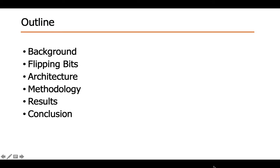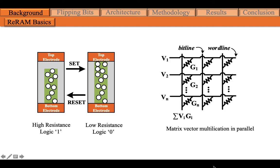This is the outline of this presentation. Let's first start with some backgrounds on RERAM devices. An RERAM cell is a sandwiched structure. A set or reset operation will construct or destruct the oxygen vacancy filaments in the middle layer to change the resistance of the cell. The high resistance state represents a 1, and the low resistance state represents a 0. RERAM cells are usually organized as a crossbar structure to conduct matrix-vector multiplication. The matrix values are programmed into RERAM cell resistance, and the input values are converted into voltages applied on the word lines. The current flowing out from the bit lines represents the multiplication results.